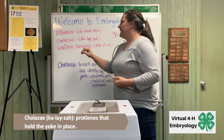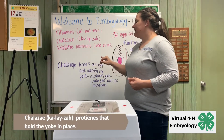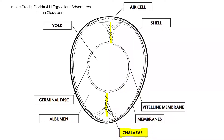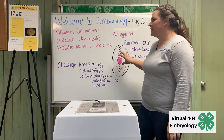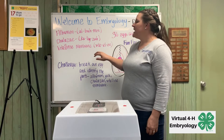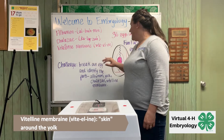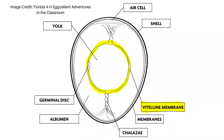And then we have the chalaza. The chalaza is the proteins that connect the inside of the egg. They're a little bit hard to see but they're definitely there on all of the eggs and it holds it all kind of together. And then we have the vitelline membrane, which is a dark circle that goes around the outside of the yolk.